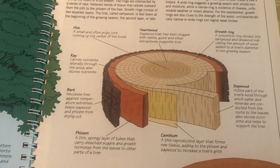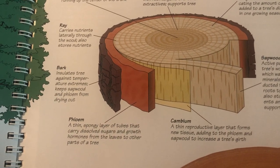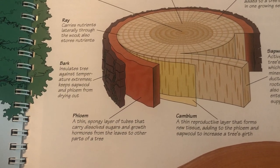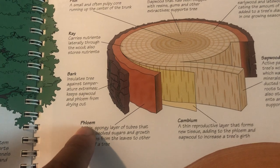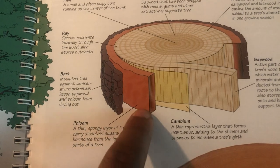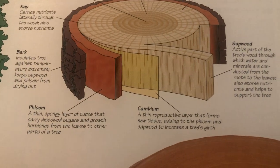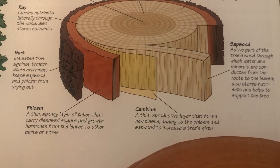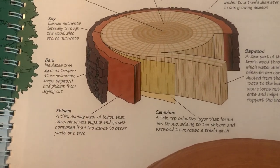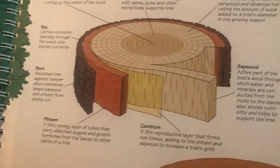I understand I'm about to say something really stupid, but a tree really is alive. I don't know how to pronounce it, but this is basically like the highway bringing all the goodness around. It's a thin reproductive layer that forms new tissue, adding to the sapwood and increasing the tree's girth — making it bigger, wider, thicker.